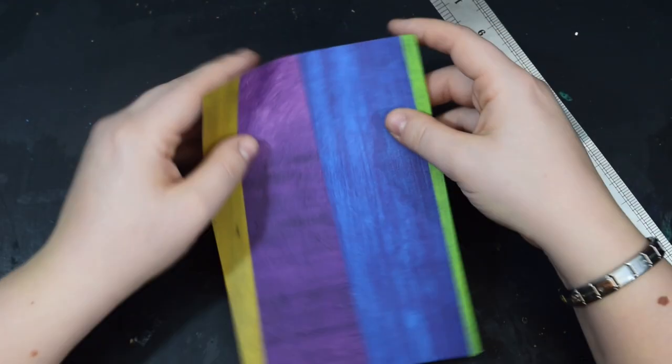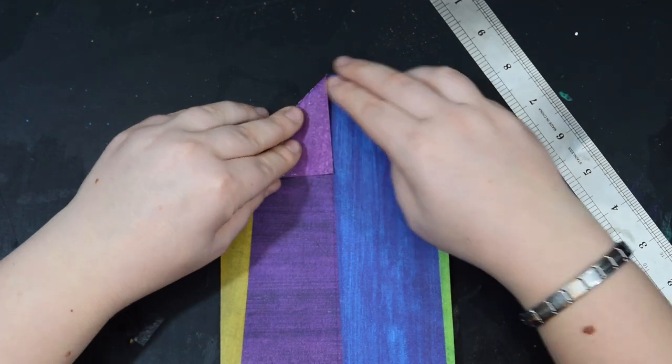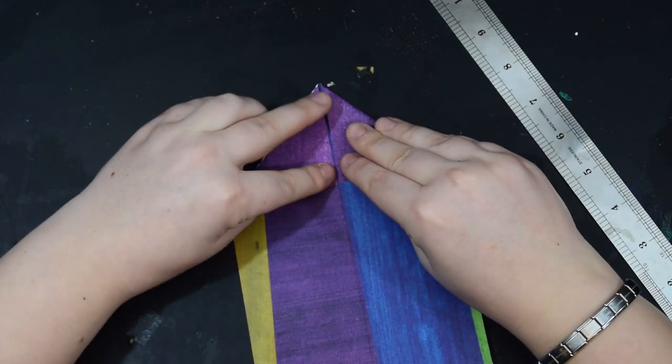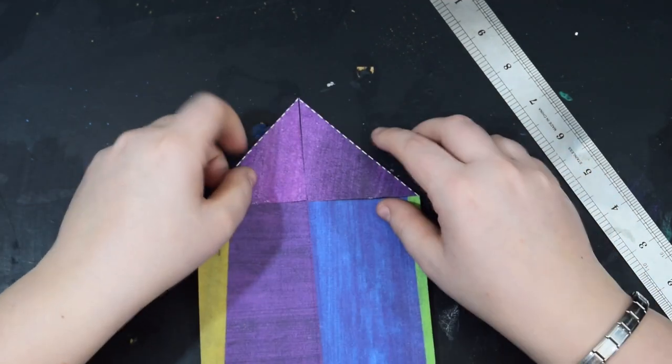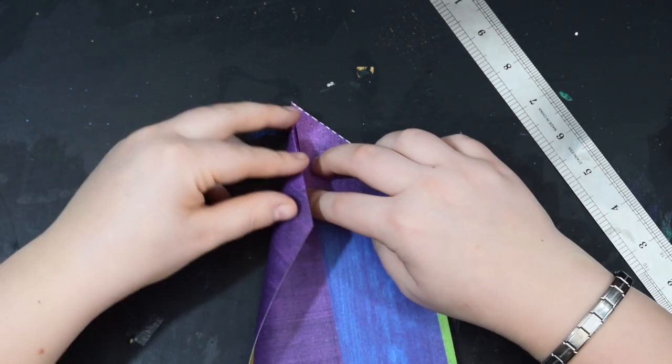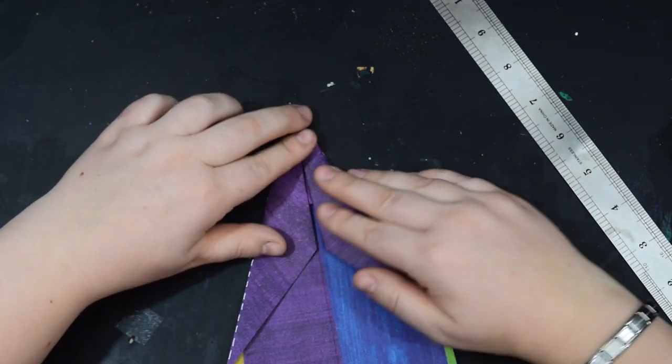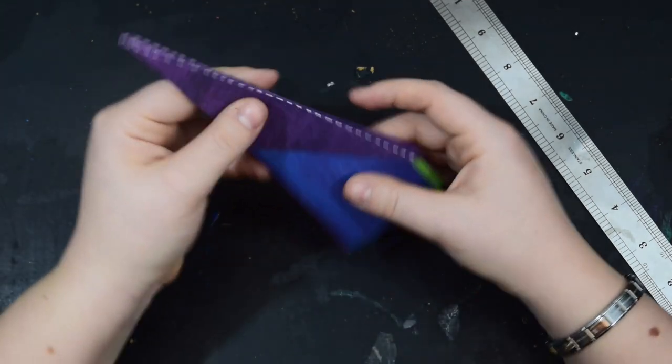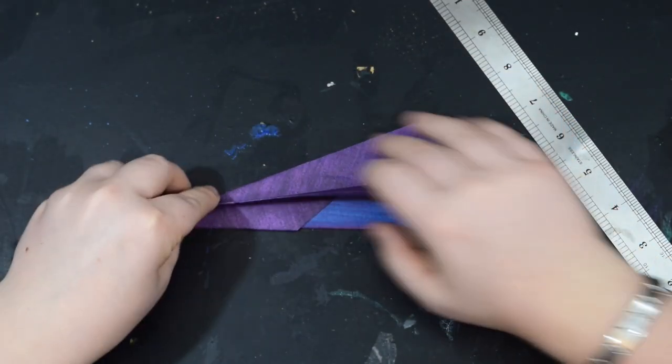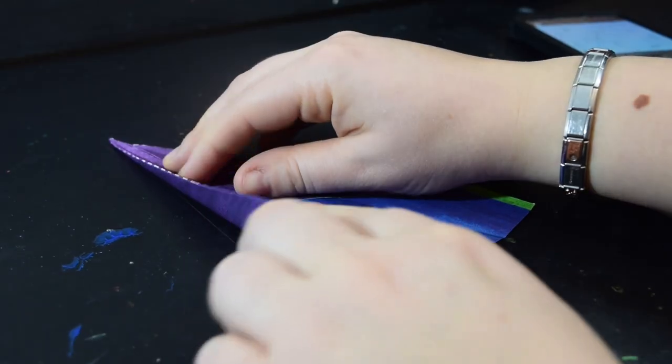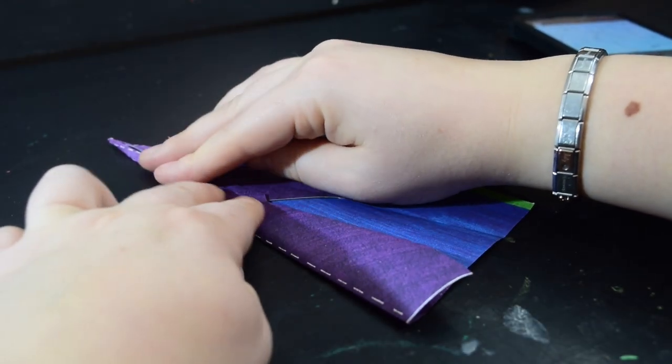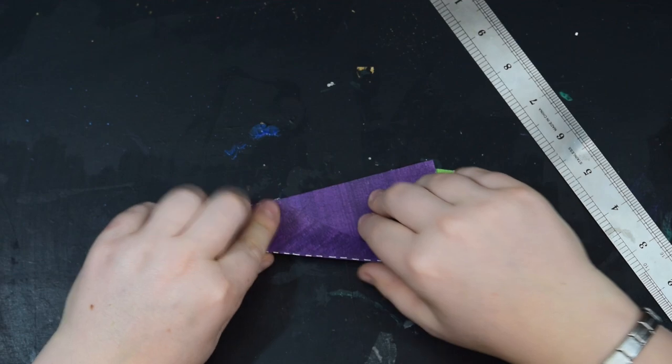So do I fold it this way so we can see the line. Ta-da. So I'm guessing we go in again. Yeah and that does follow that line look at that. Fold it in half. And then we've got those down like so. There we go. How clever.